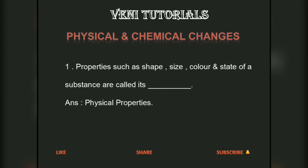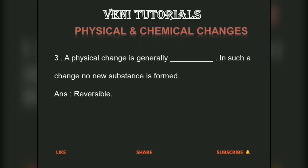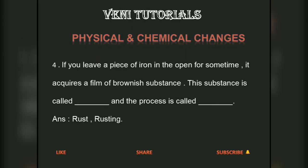Properties such as shape, size, color, and state of a substance are called its physical properties. A change in which a substance undergoes a change in its physical properties is called a physical change. A physical change is generally reversible; in such a change, no new substance is formed.